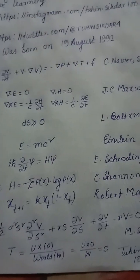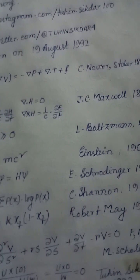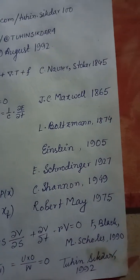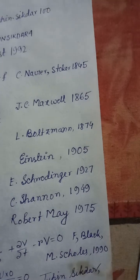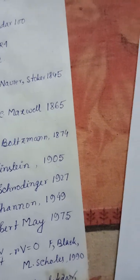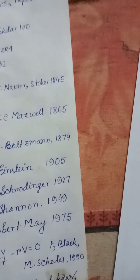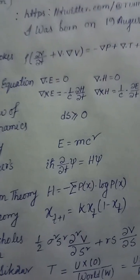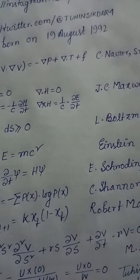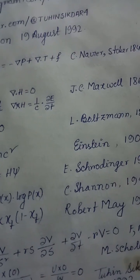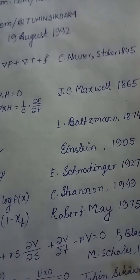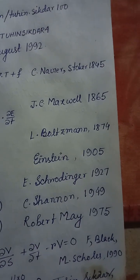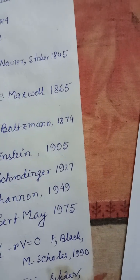Equation 17: Black-Scholes equation — (1/2)·ρ²·s²·∂²V/∂s² + r·s·∂V/∂s + ∂V/∂t − rV = 0, Black-Scholes, 1973. Equation 18: Tuhin Sikdar theorem — T = u(0) / W, where W = u(0) / w = 0, Tuhin Sikdar, 1992.